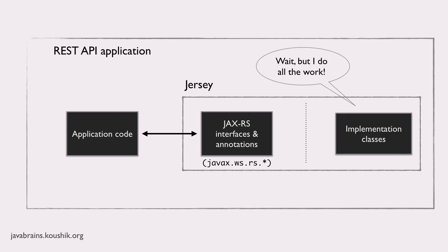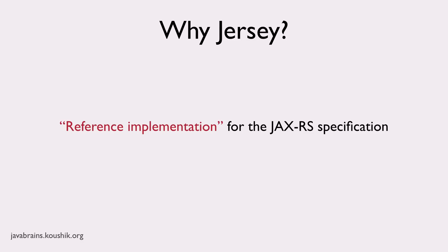So now to address the other question about which library to learn — we've established that the choice of library doesn't matter. You can choose RESTEasy, you can choose Apache Wink or Jersey or whatever. But why did I choose Jersey for this course? I chose Jersey because it's what's called a reference implementation. It's like a model implementation for the API, and this implementation is built by a lot of the same people who designed the API specification itself. So if you have to pick one library, at least for the purpose of learning, you cannot go wrong by picking the reference implementation.